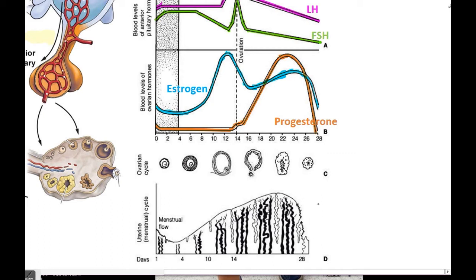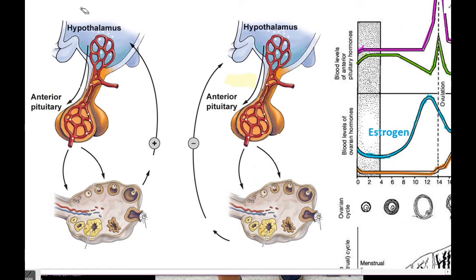The beginning of a cycle is marked by menses — that's when the menstrual flow is going to happen. At that point, the hypothalamus is going to release a hormone called GnRH, gonadotropin-releasing hormone. A releasing hormone is a hormone from the hypothalamus that allows the anterior pituitary gland to release another hormone. In the presence of GnRH, the anterior pituitary gland is going to release two hormones: FSH and LH.